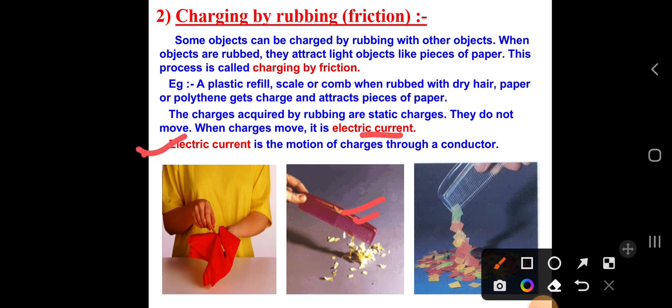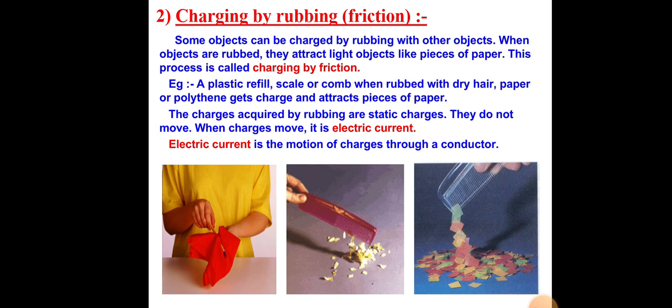Electric current is the motion of charges through a conductor. As you know from previous classes, electric current is the flowing of electrons. The flow of charges is called electric current. But here no electric current is produced — the charges are present in the body. In each and every object there are charges. In a plastic comb also, charges are present. By rubbing plastic objects, charges are produced and they attract other objects.